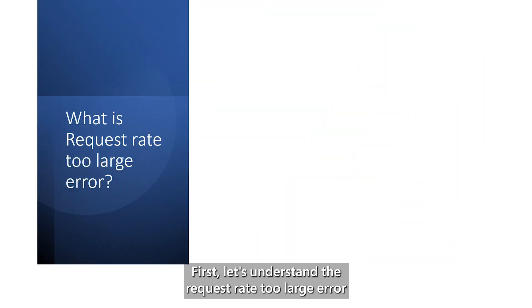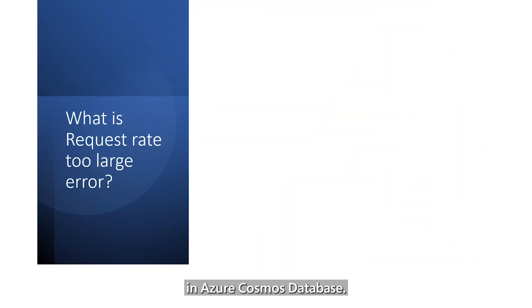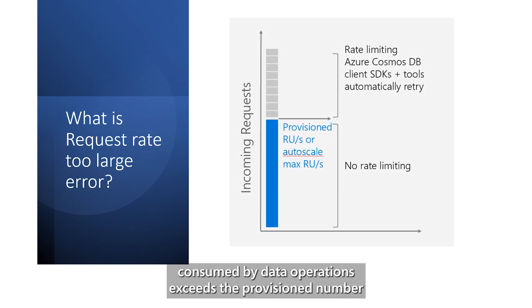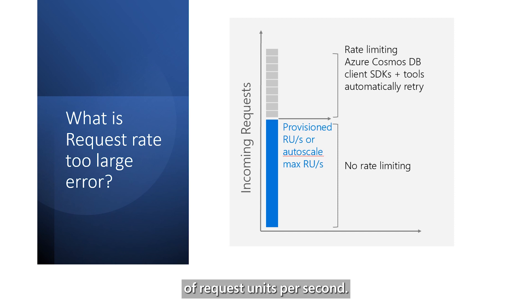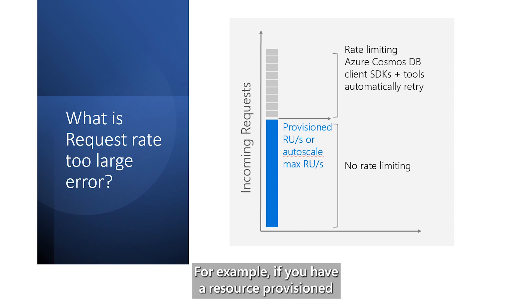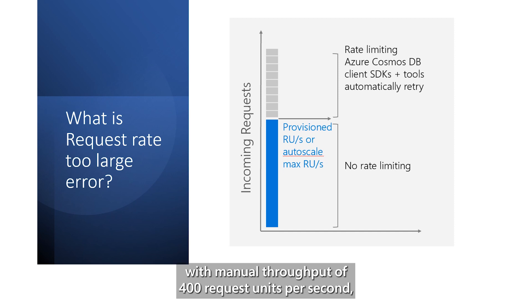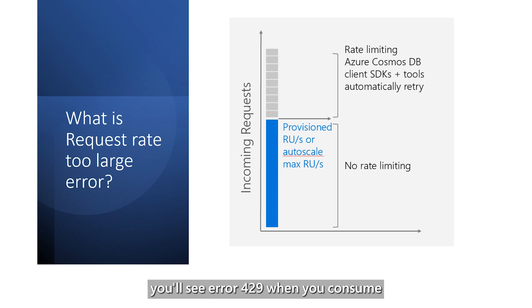Let's understand the request rate too large error in Azure Cosmos database. This error occurs when the request units consumed by data operations exceeds the provisioned number of request units per second. For example, if you have a resource provisioned with manual throughput of 400 request units per second, you'll see error 429 when you consume more than 400 request units in a second.